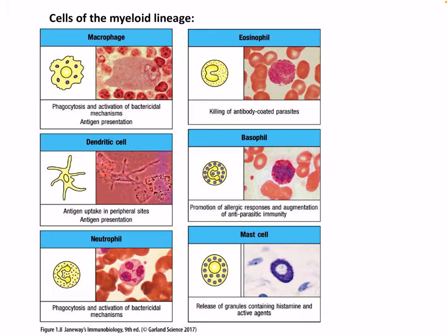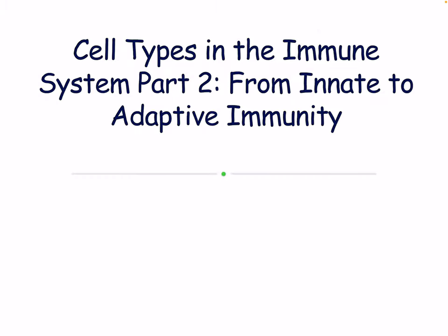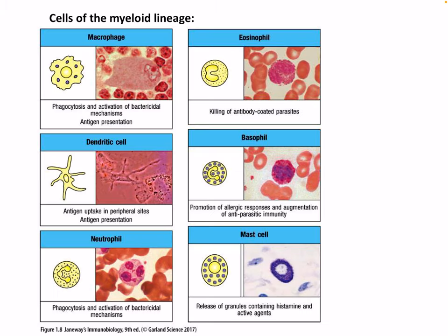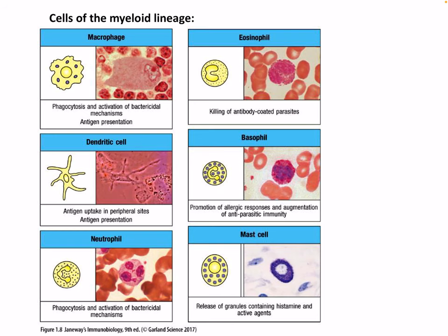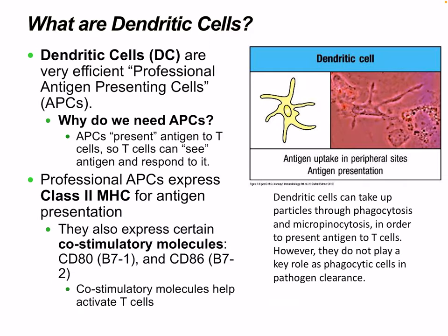Now we're going to look at the transition from the innate system to the adaptive system. The most important antigen-presenting cell is the dendritic cell. Dendritic cells are very efficient, professional antigen-presenting cells. We need APCs because they present antigen to T cells so T cells can see antigen and respond. Professional APCs express class 2 MHC for antigen presentation, meaning they interact with T helper cells.